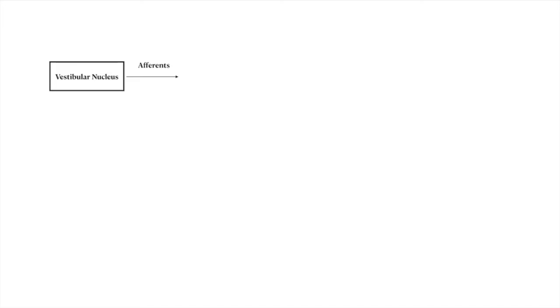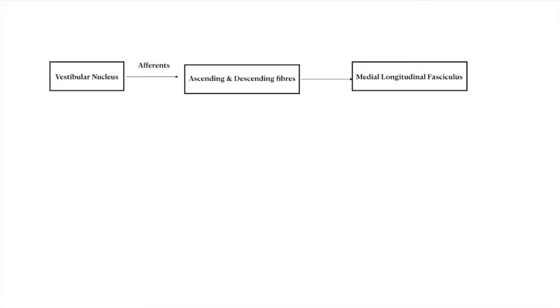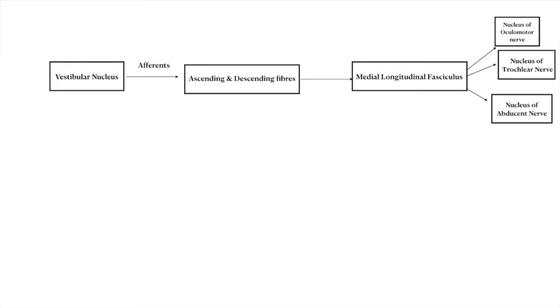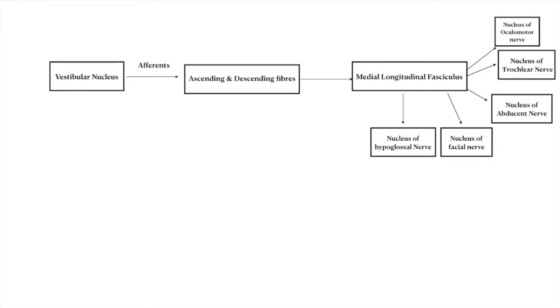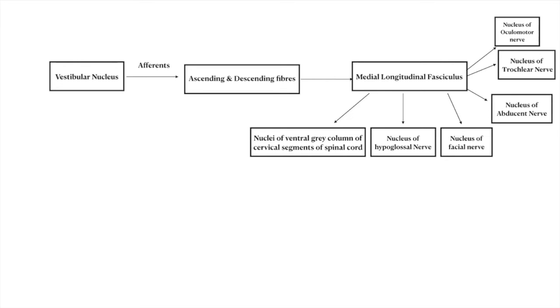The efferents from the vestibular nucleus approach the midline and divide into ascending and descending branches with or without crossing, forming the medial longitudinal fasciculus. This medial longitudinal fasciculus gives collaterals to the nuclei of the oculomotor nerve, the trochlear nerve, the abducens nerve, the facial nerve, the hypoglossal nerve, and the nuclei of the ventral gray column of the cervical segments of the spinal cord related to the cranial part of the accessory nerve.